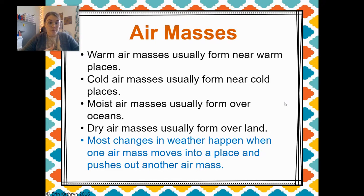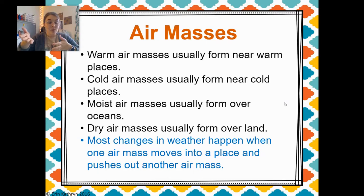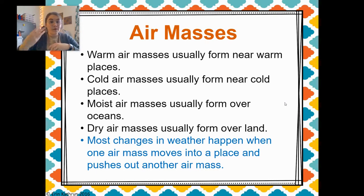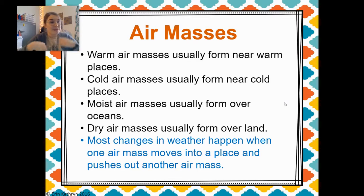Think of it this way: if it's a warm place, it's going to be a warm air mass. If it's a cold place, it's going to be a cold air mass. If it's moist, it's going to form over an ocean because there's water. And if it's dry, it's going to form over land because there's no water.